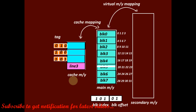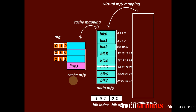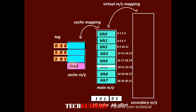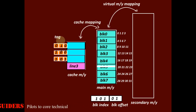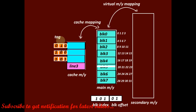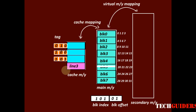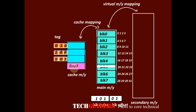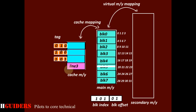The advantages of associative mapping are that it is the most flexible method of mapping. We can choose any free cache line when bringing a main memory block to the cache, allowing us to utilize the cache space to the maximum. Replacement is required only when the cache is completely full.